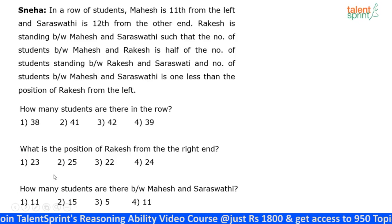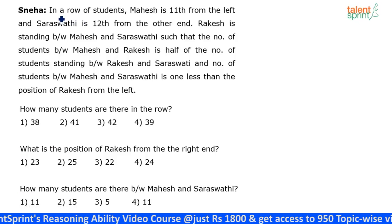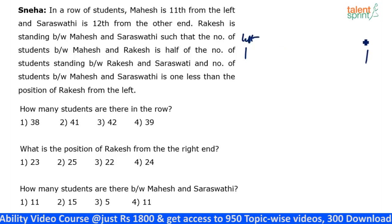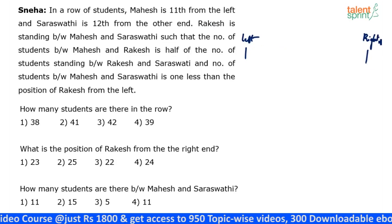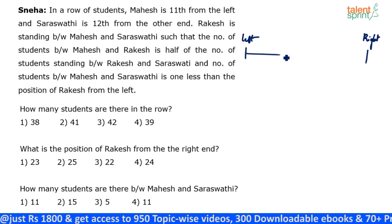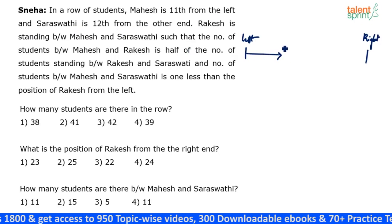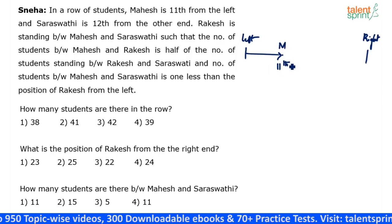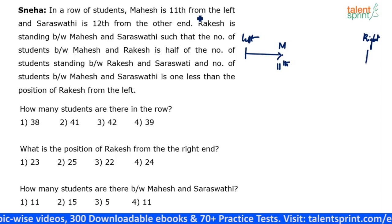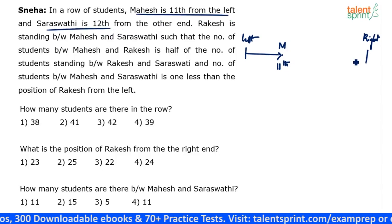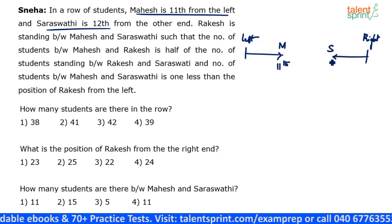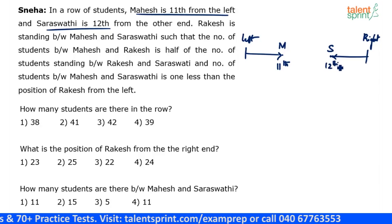Let's discuss this now and try to do the plotting very properly. Assume this is the left end and here is the right end. Mahesh is 11th from the left end — so this is Mahesh's position, 11th from the left end. Saraswati is 12th from the other end, which is the right end. So Saraswati is 12th from the right end.